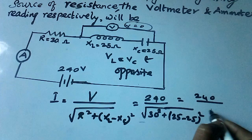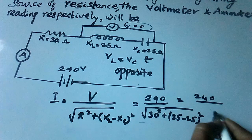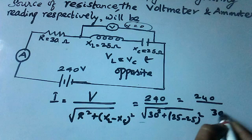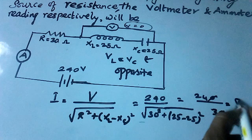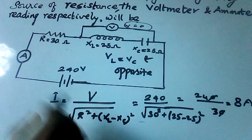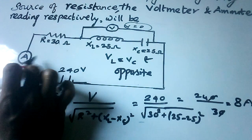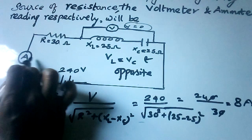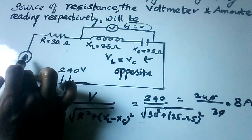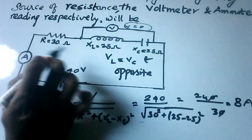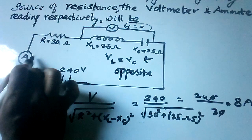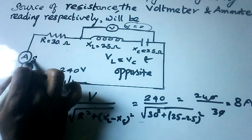So we can get 8 ampere. Now the current flowing through the entire circuit is 8 ampere, and the ammeter reading, which is the current flow through the entire circuit, reads 8 ampere.